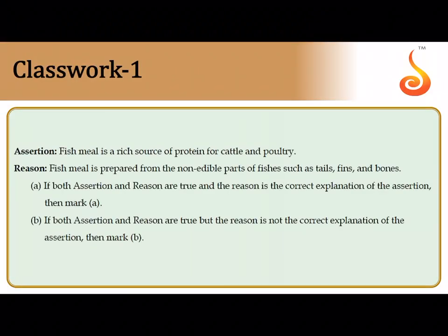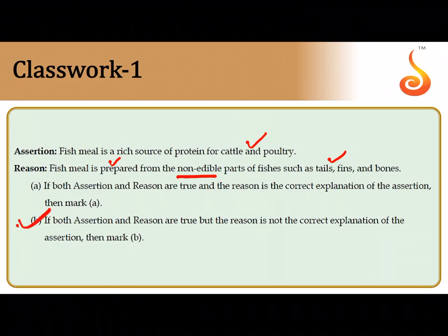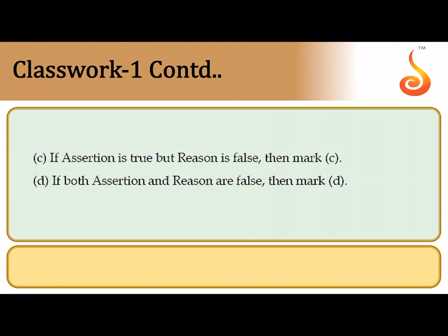Moving to the next chapter — strategies for enhancement in food production — which includes both plant breeding and animal husbandry. Fish meal is a rich source of protein for cattle and poultry. Fish meal is prepared from non-edible parts of fishes which are non-edible by humans but edible by other animals such as tail, fin, and bone. Both assertion and reason are correct, but the reason is not the correct explanation of the assertion, so the correct answer is option B.